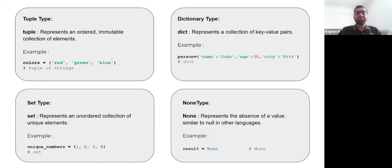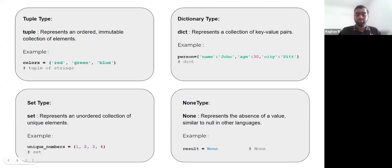So this is the difference between tuple and lists. Similarly, we also have the set data type, which is very similar, but a set represents an unordered collection of unique elements — there is no inherent order in a set.